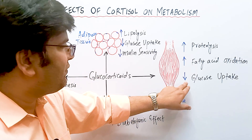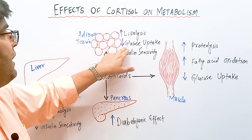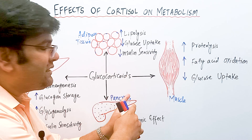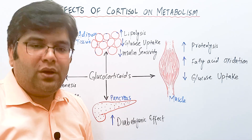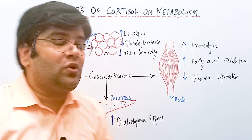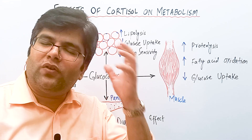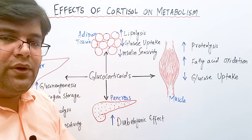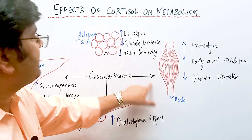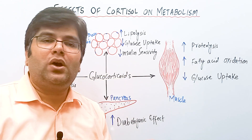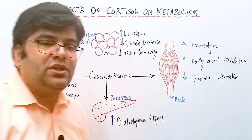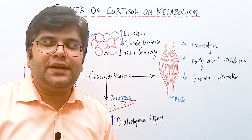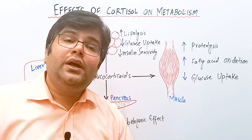Cortisol also decreases the uptake of glucose by muscles and adipose tissue, further raising blood glucose level. Importantly, this decrease in glucose uptake does not occur in the brain. The decrease in peripheral glucose uptake is due to reduced GLUT4 carriers in muscle and adipose tissue. By decreasing GLUT4, cortisol has an anti-insulin effect and causes insulin resistance.